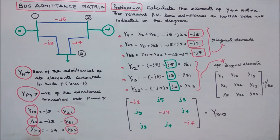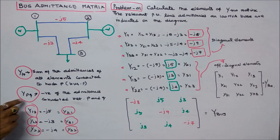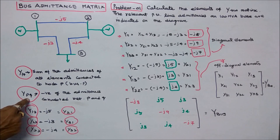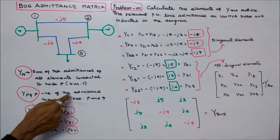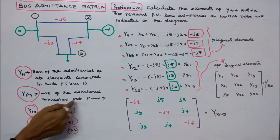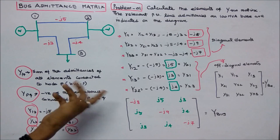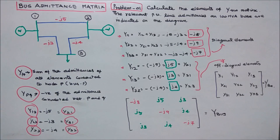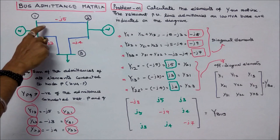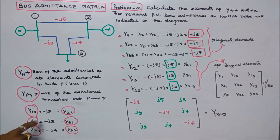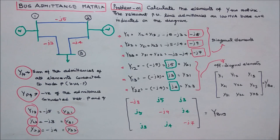The next step is to find the off-diagonal elements. YPQ is equal to the negative of the admittance connected between buses P and Q. Here Y12 given is minus J5, and that equals Y21.